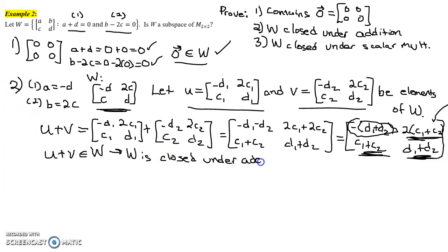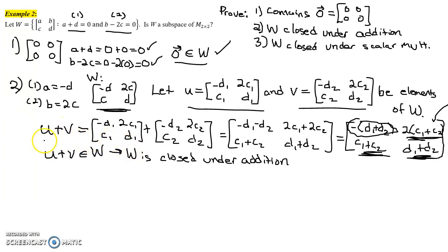When you show that something is closed under addition, make sure you prove it this way. It's not sufficient to pick two specific matrices in W and show that their sum is in W, because showing it's true in one case is not the same as showing U plus V is in W in all cases. The process shown here demonstrates that if U is any element of W and V is any element of W, then U plus V is necessarily an element of W.